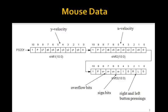If you move too fast, you'll get an overflow bit set in this Shift 3 data packet. These are the overflow bits for Y and the overflow bits for X. These two bits, R and L, will tell you which button you're pressing. If you're pressing the right button, this R bit will go to 1. If you're pressing the left button, this L button will go to 1.